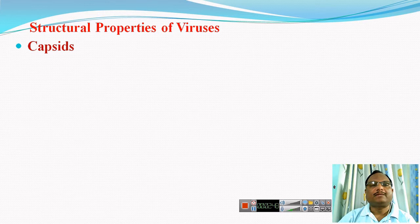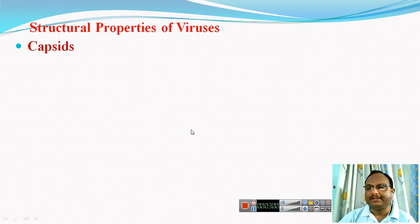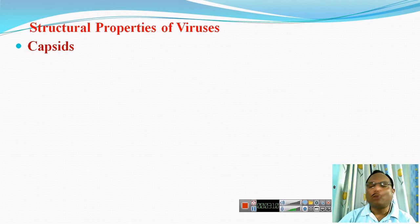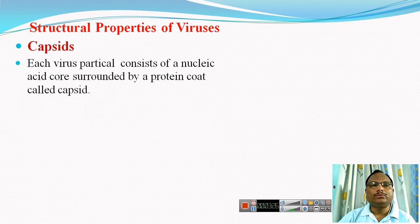Viruses are mainly consisting of three structural components. One is the nucleic acid, which is present at the center. That nucleic acid is surrounded by a proteinaceous coat called the capsid, and in some viruses that capsid is in turn surrounded by a membrane called the envelope. Among these three components, the important structural component is the capsid, which can be called the shape-determining component of the viruses.